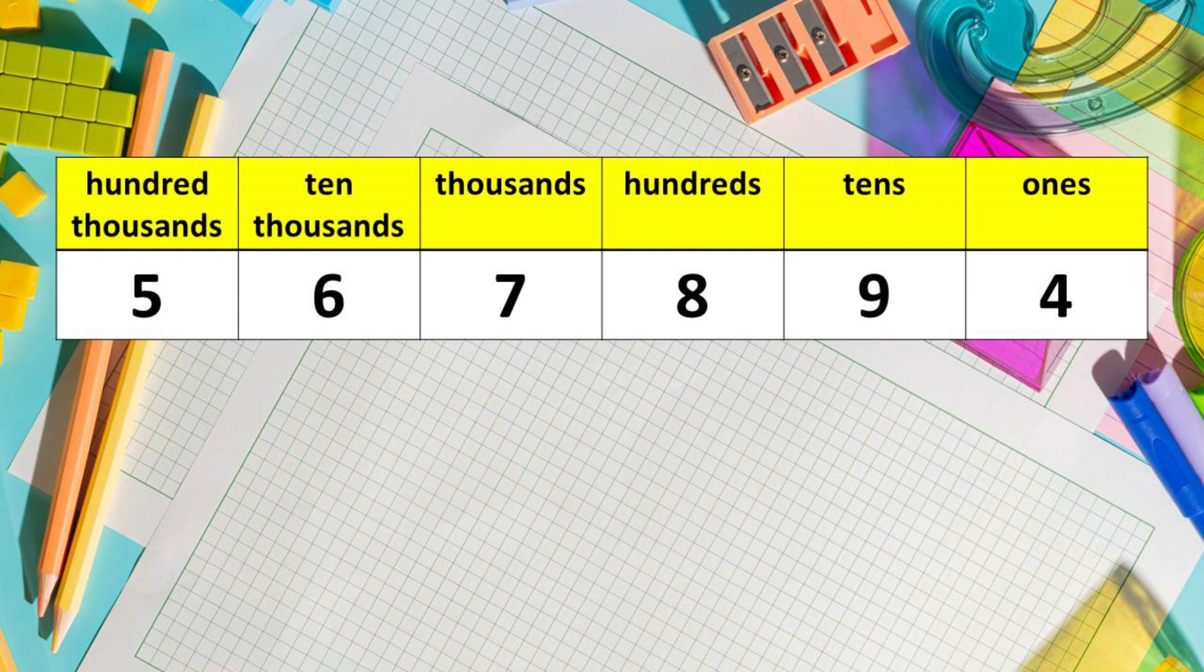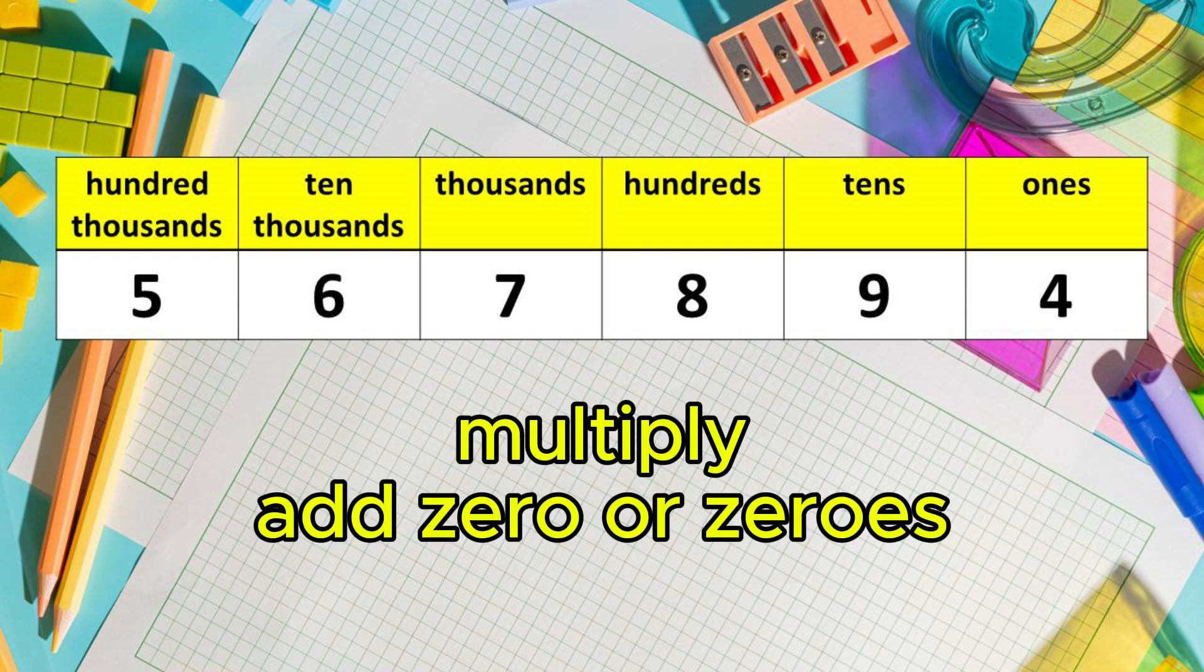So kids, it is up to you what makes it easier for you to determine the value of its digit. You can multiply the place value by its digit. Or you can just add 0 or zeros. It depends on the place value except one's place wherein it remains as it is.